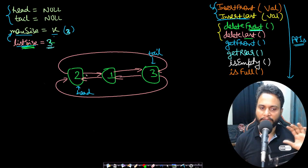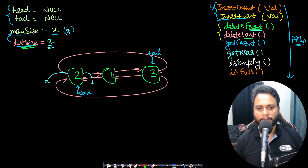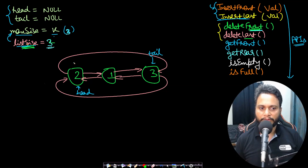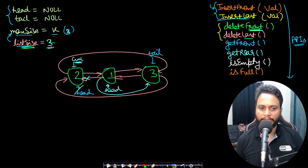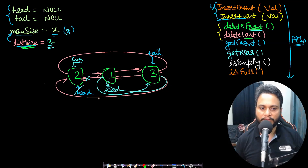To delete from the front, we first delink the front value. But if we make both next and previous pointers null immediately, head cannot be updated because the next item was not saved. So I take a current pointer pointing to head, then update head to head's next, then delink current: make head's previous pointer point to tail, and make tail's next pointer point to the new head. So current becomes delinked.